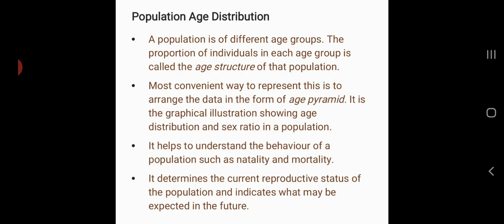It is important to study age distribution of a population because it helps to understand the behavior of a population — that is, the natality, mortality, and current reproductive status of the population, as well as future trends, that is whether it is rapidly growing, stable, or declining.